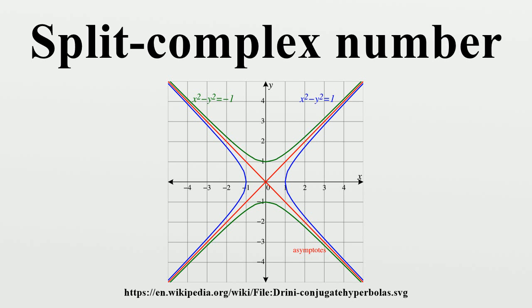D.H. Lehmer reviewed the article in Mathematical Reviews and observed that this second system was isomorphic to the hyperbolic complex numbers, the subject of this article.